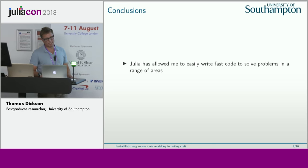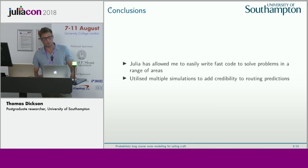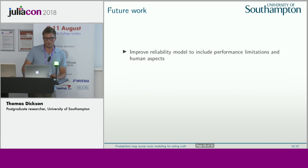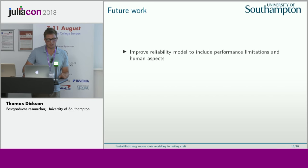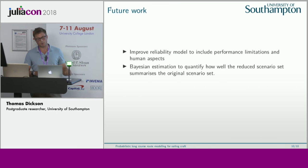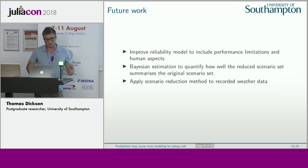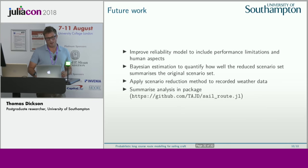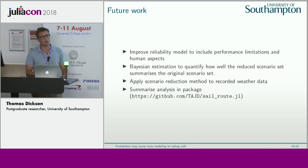To conclude: Julia has allowed me to easily write fast code to solve problems across a range of areas, and I've been able to utilize multiple simulations to add credibility to routing predictions. In the future, I want to improve the reliability model to include performance limitations and human aspects, use Bayesian estimation to quantify how well the reduced scenario set summarizes the original, and apply scenario reduction to recorded spatio-temporal weather conditions. I'm summarizing this on my GitHub page in various packages.